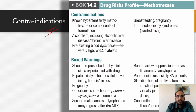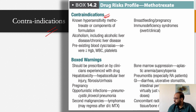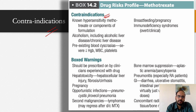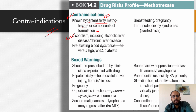Absolute contraindications to methotrexate include: known hypersensitivity to methotrexate or its components, alcoholism, chronic liver disease including alcoholic liver disease, and pre-existing blood dyscrasias such as decreased hemoglobin, WBC, or platelets. These tables are sourced from Wolverton's fourth edition, which is the recommended reference for drug knowledge in dermatology.